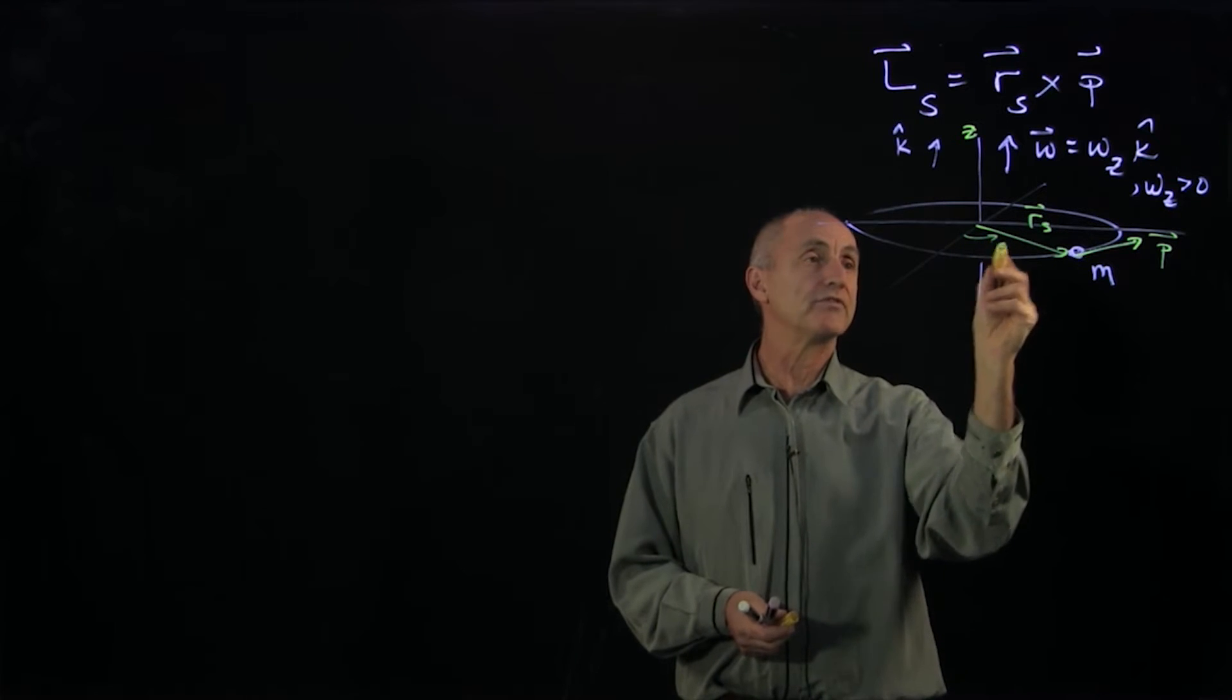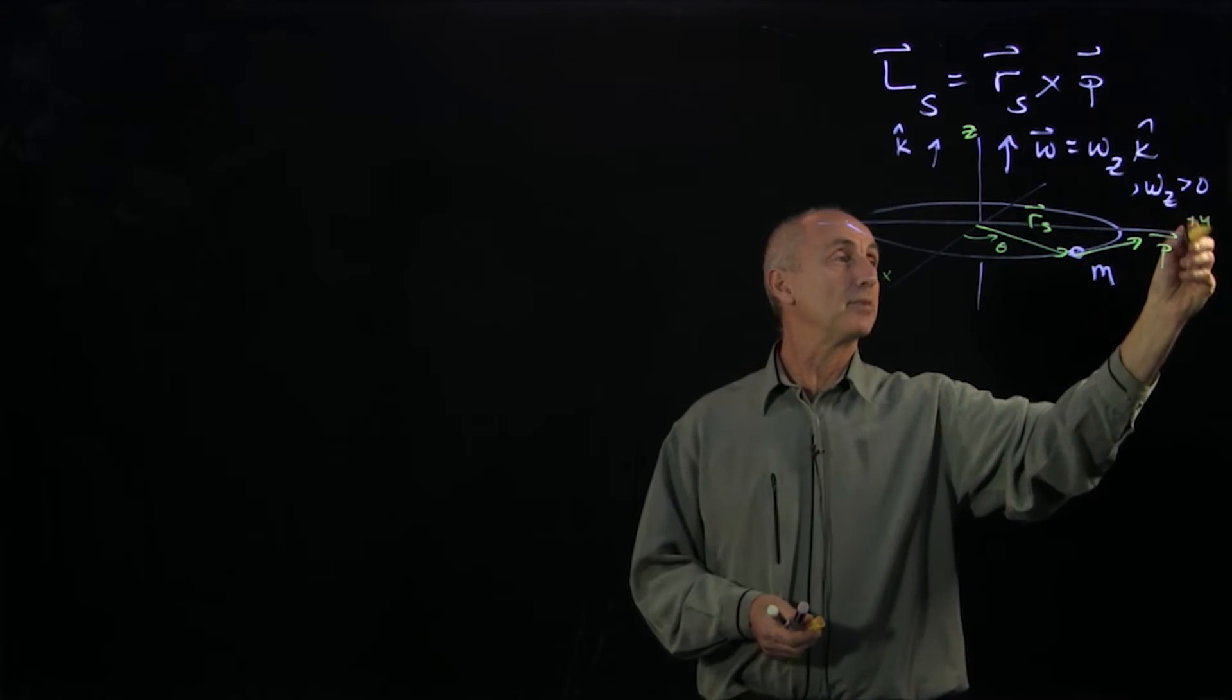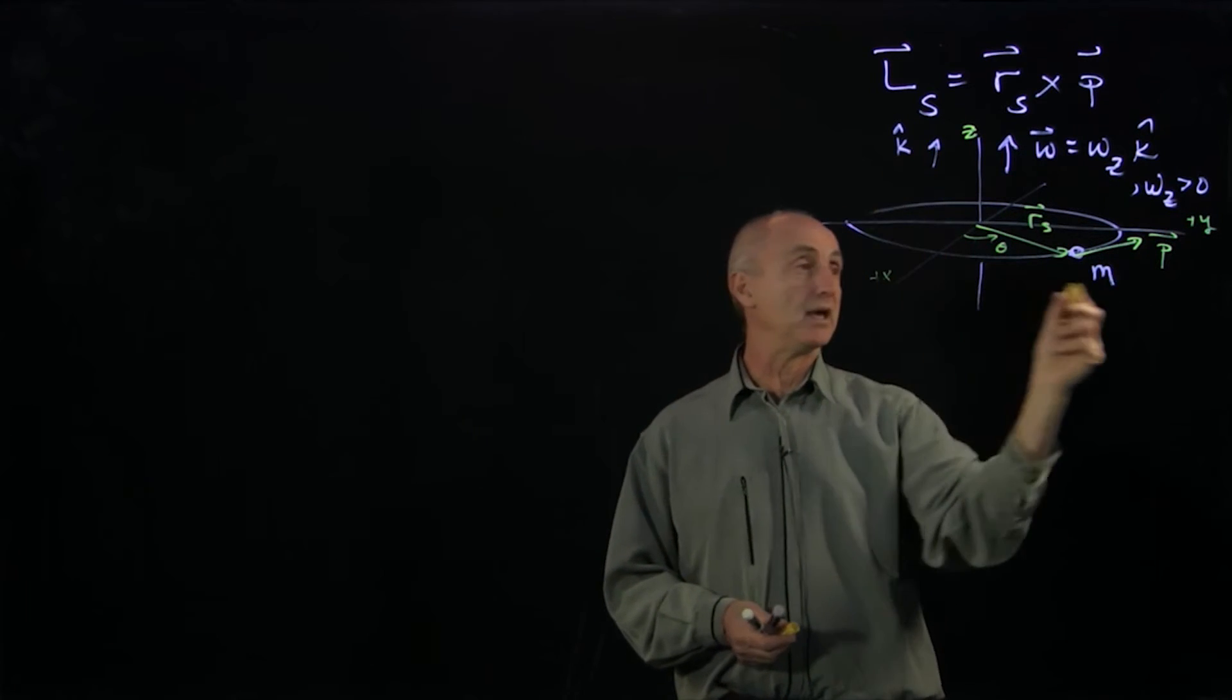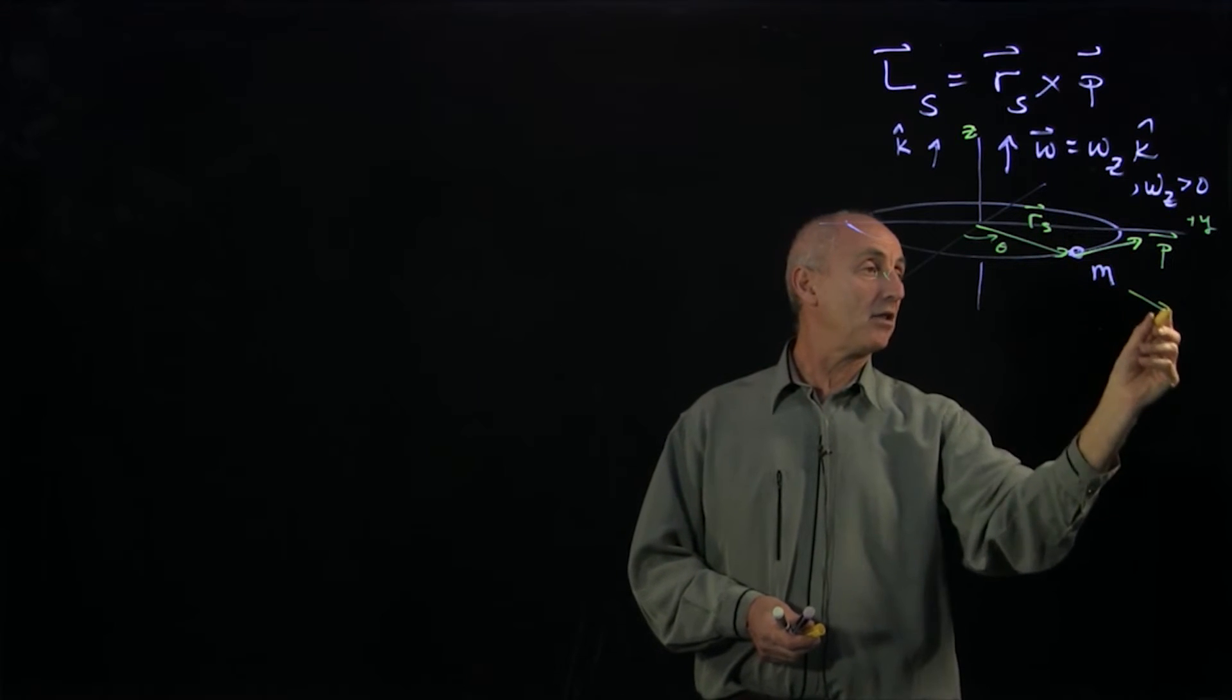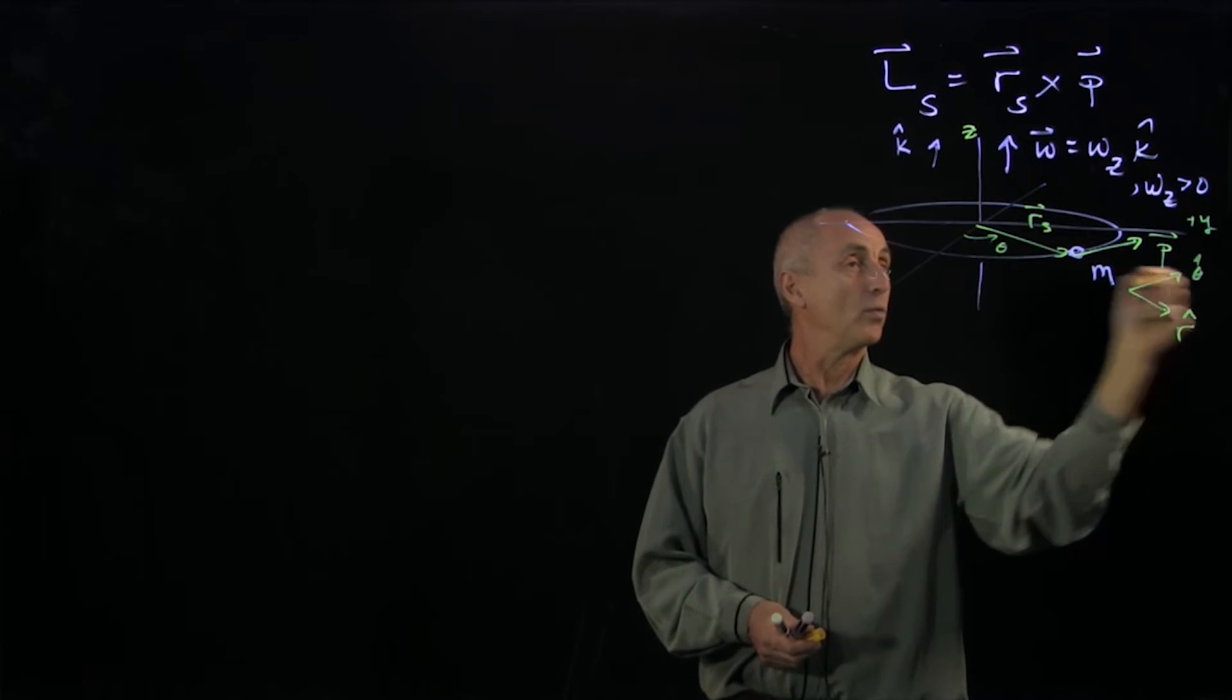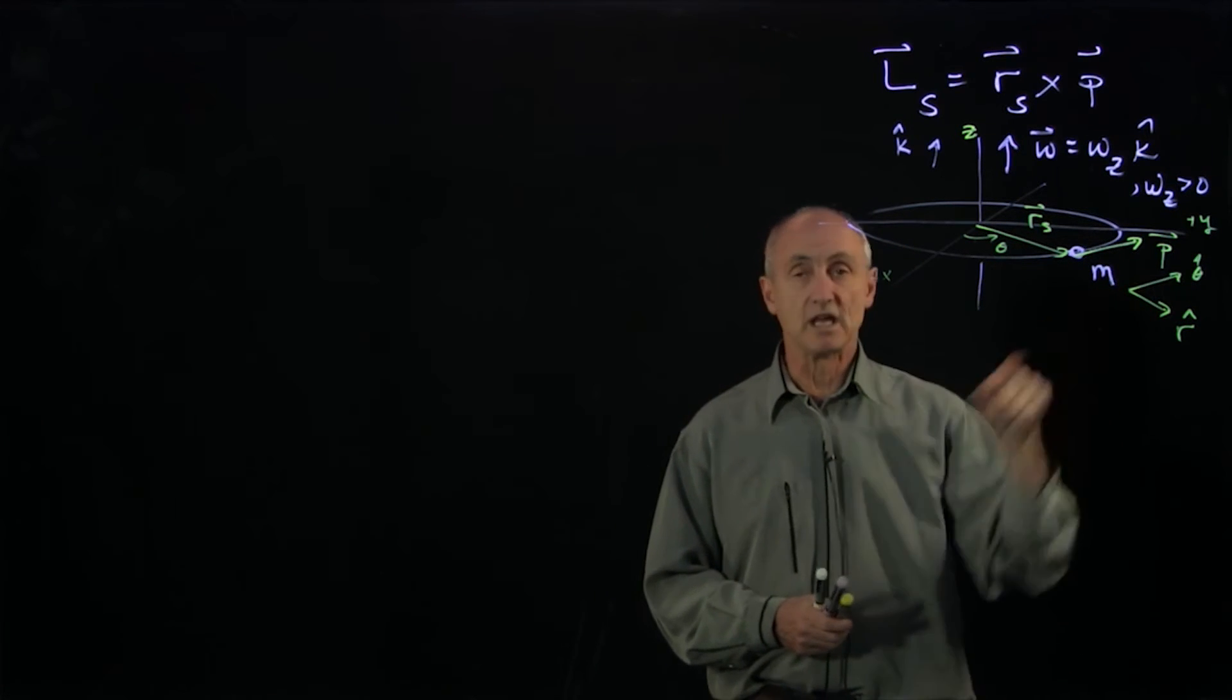We'll define some angle theta. If this is my plus x, my plus y-axis, that's consistent with k-hat being up and our definition of omega. I'll define an r-hat unit vector pointing radially outward from the center of the circle, and a theta-hat vector which is tangent to the circle.